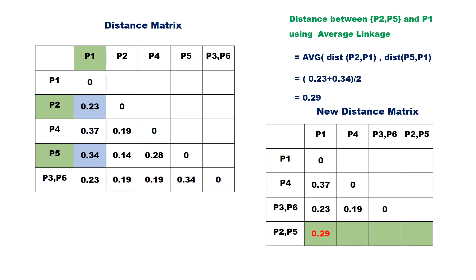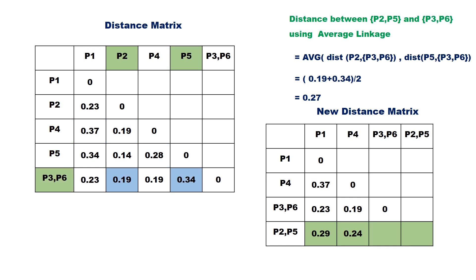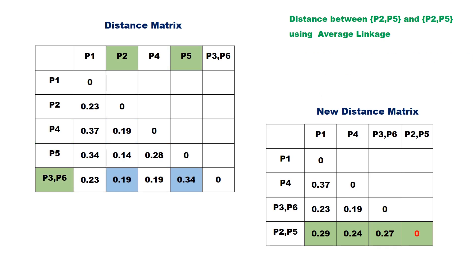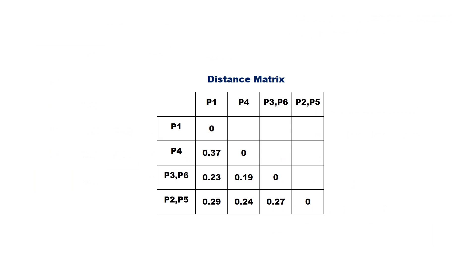The distance between P2,P5 and P1 is 0.29. The distance between P2,P5 and P4 is 0.24. The distance between P2,P5 and P3,P6 is 0.27. Here is the updated distance matrix.